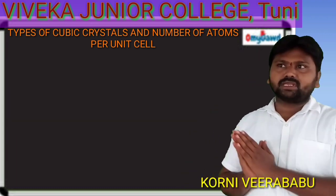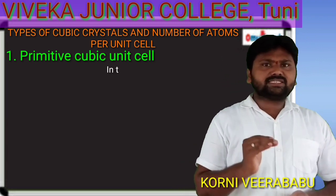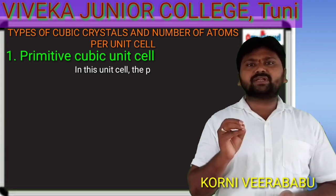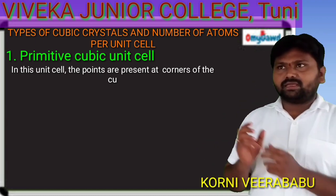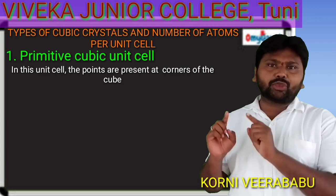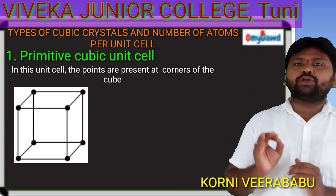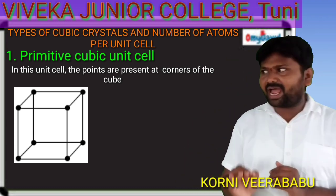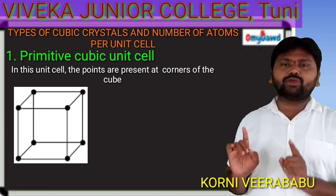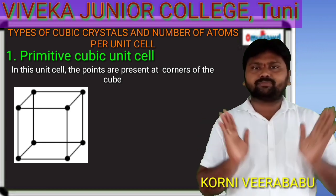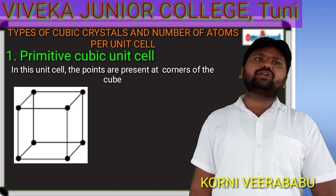The first type is the simple or primitive cubic unit cell. In this unit cell, lattice points are present only at the corners of the cube. Atoms are present at the corners of the cube only.